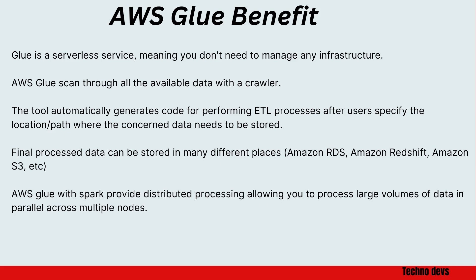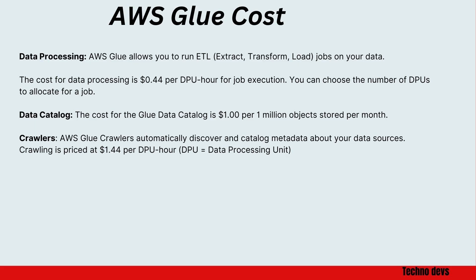AWS Glue with Spark provides distributed processing, allowing you to process large volumes of data in parallel across multiple nodes. For cost of using AWS Glue — data processing: AWS Glue allows you to run ETL (extract, transform, load) jobs on your data. The cost for data processing is $0.44 per DPU for job execution.